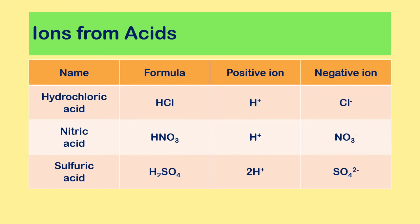For example, hydrochloric acid has the formula HCl. When it dissolves, we get H⁺ and Cl⁻. Nitric acid, HNO₃, gives H⁺ and NO₃⁻. Sulfuric acid, H₂SO₄, gives two H⁺ ions and the sulfate ion SO₄²⁻.